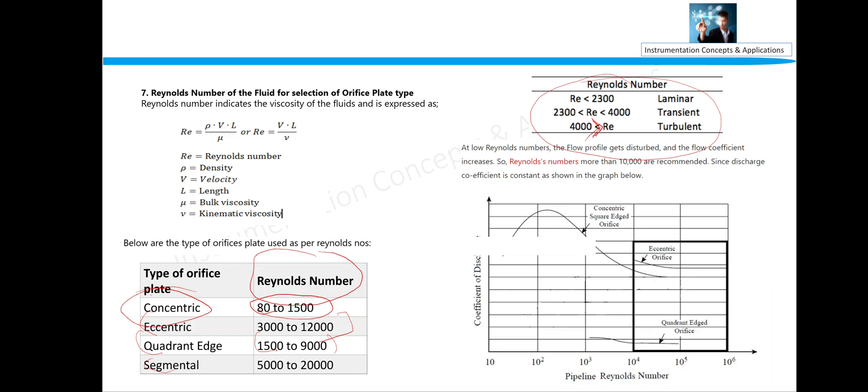You can see that this is the graph of discharge coefficient versus Reynolds number. For less Reynolds number, concentric type is used. As the Reynolds number is getting increased, eccentric and then quadrant edge orifice type is being used.